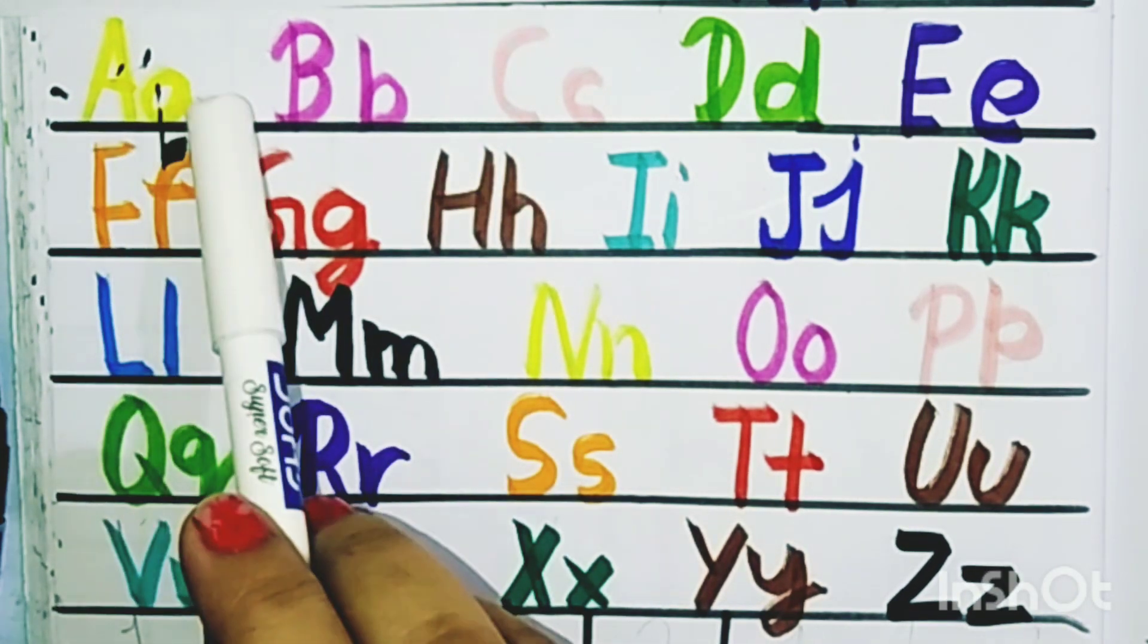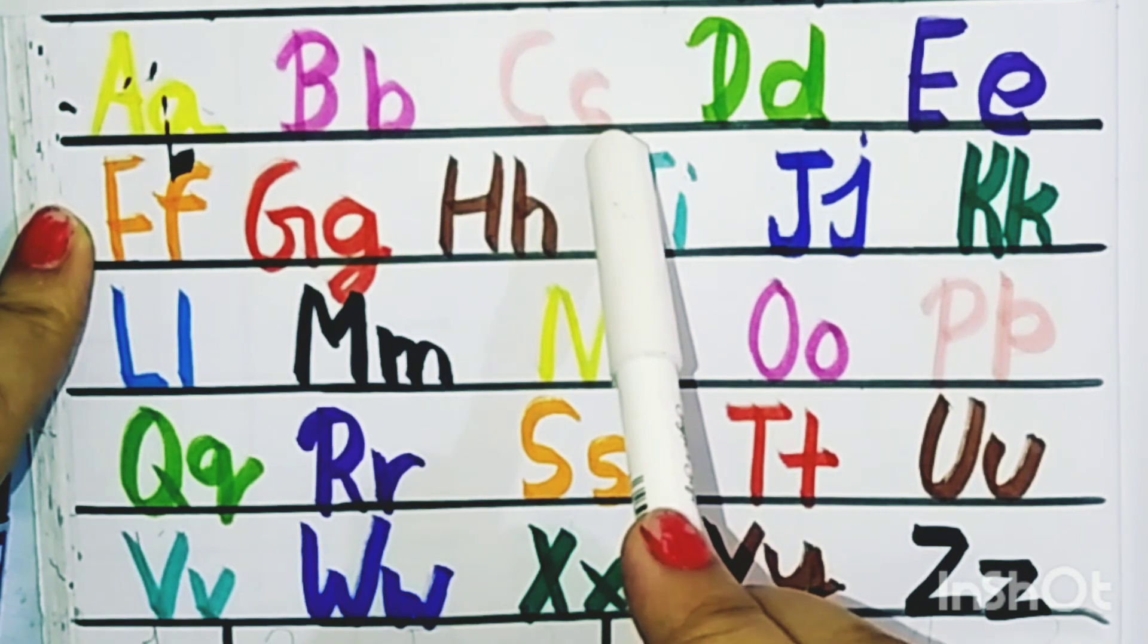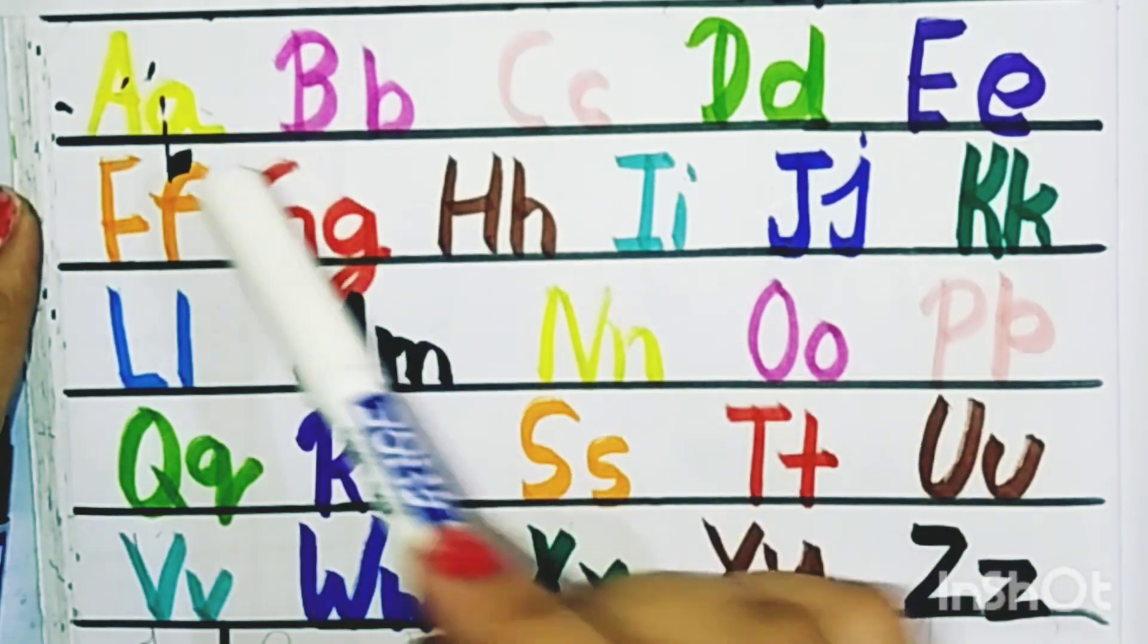Now these are capital and small alphabets. A for apple and B for ball. And today we learn alphabets.